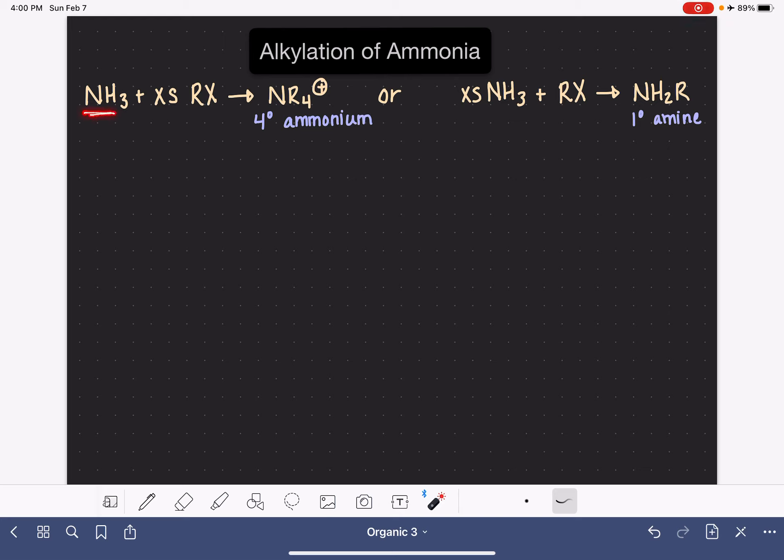the relative amount of amine and alkyl halide. If you run the reaction with excess alkyl halide, you'll end up with the quaternary ammonium. If you run the reaction with excess amine, not very much alkyl halide, you'll end up with a primary amine.